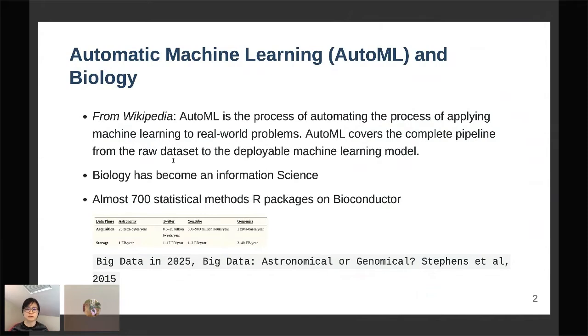This basically means that AutoML should be able to take a raw dataset and come up with the optimum deployable machine learning model. As a computational biologist, I have seen the explosion of biological data in the past 10 years and biology has really become an information science.